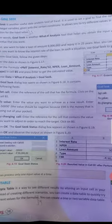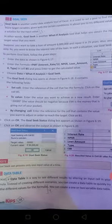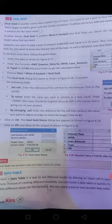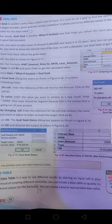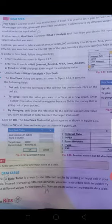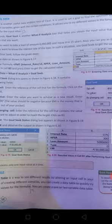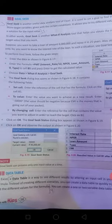Now goal seek. In this goal seek is another useful data analysis tool of Excel. It is used to set a goal to find the target variable given with the certain condition. It allows us to try different values in a solution for the input values. In other words, goal seek is another what-if analysis tool that helps us obtain the input value that target value that we want.